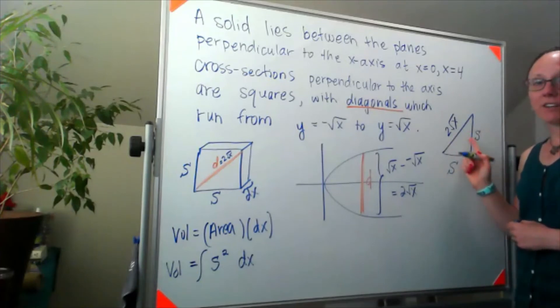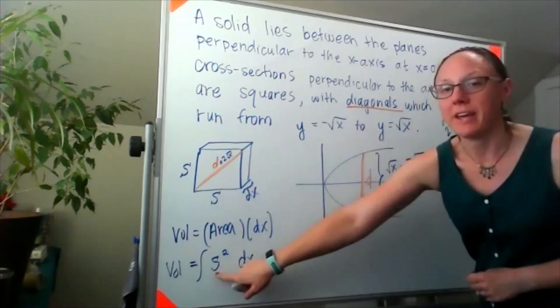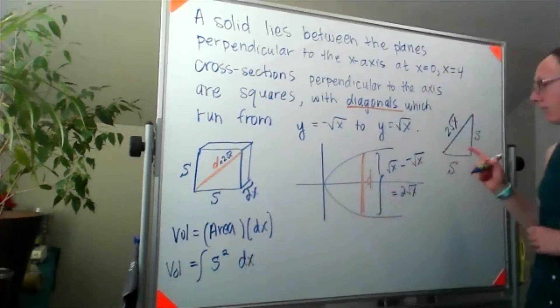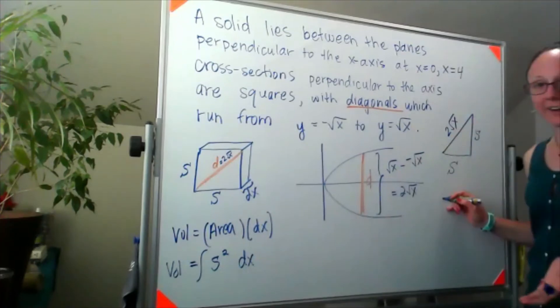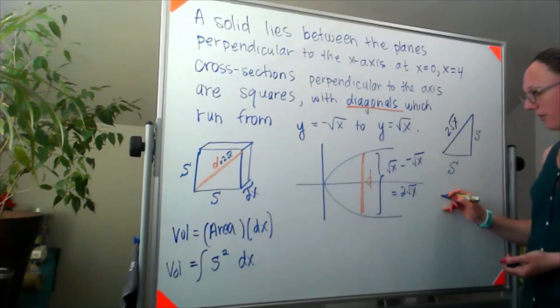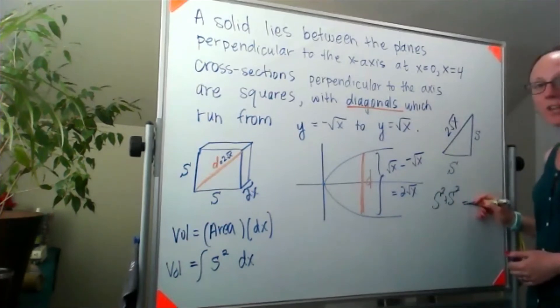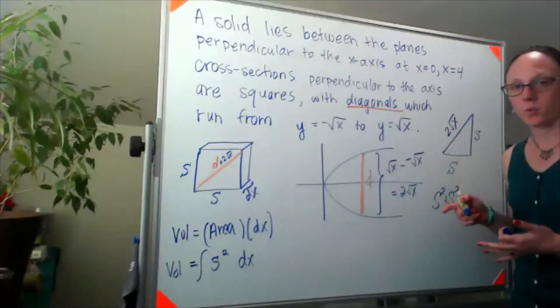So if I'm finding the relationship between s and x in order to replace my s in the integral, I would be looking at the Pythagorean theorem. So s squared plus s squared would have to be equal to 2 square root of x, whole thing squared.